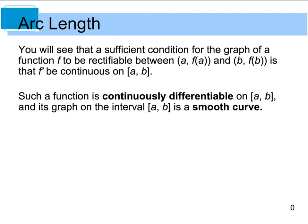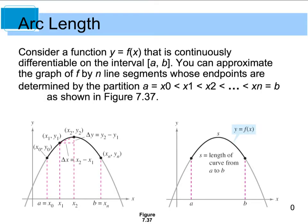A stipulation for finding the arc length is that the function's slope — because f prime is actually the slope of a curve — has to be continuous on the interval you're looking at for this to be possible. We say the function is continuously differentiable on that interval if its graph on that interval is a smooth curve. If you look at our graph, this is just some curve y equals f of x, and we're going to take that curve and break it up into all these little line segments.